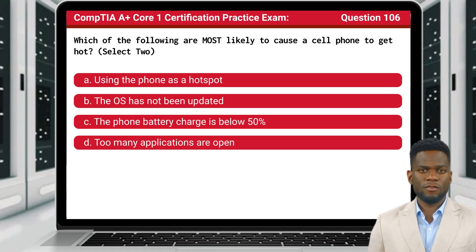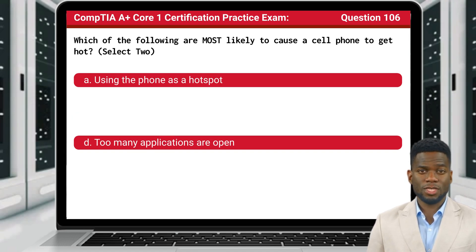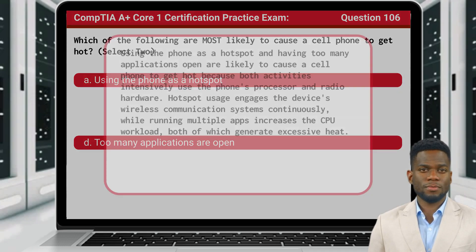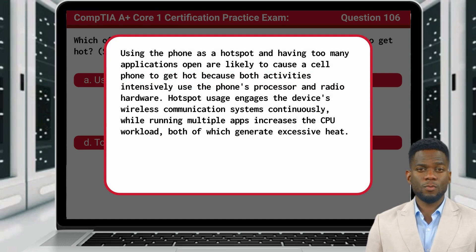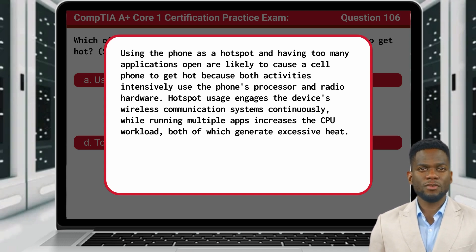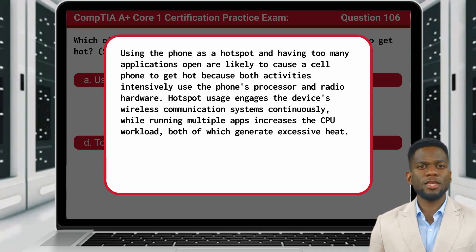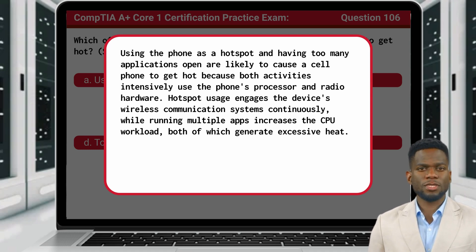Question 106: Which of the following are most likely to cause a cell phone to get hot? Select 2. The answer is A and D: using the phone as a hotspot and too many applications are open. Both activities intensively use the phone's processor and radio hardware. Hotspot usage engages the device's wireless communication systems continuously, while running multiple apps increases CPU workload, both of which generate excessive heat.